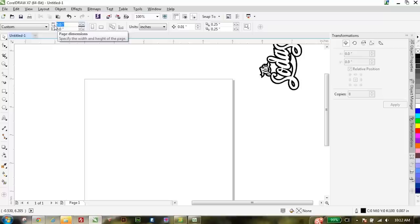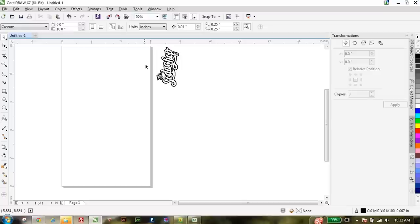Now setting this up for the laser is really easy. So what we're going to do is set our page length first, and this is going to be equal to the height of our glass, so 6 inches. And now the height of the page is actually equal to the circumference of the glass, or 10 inches.